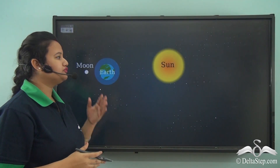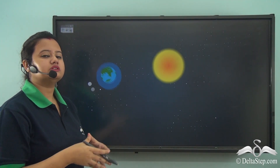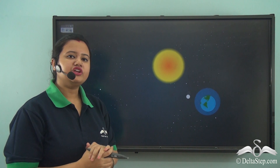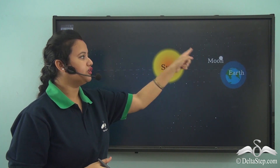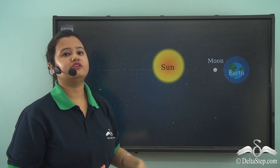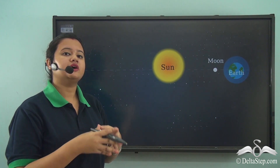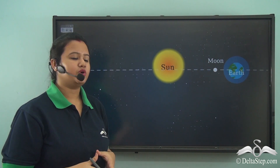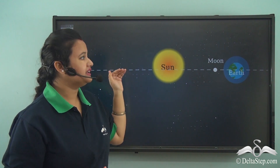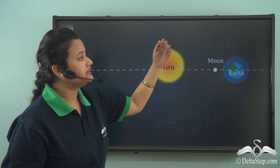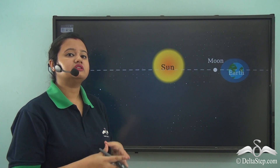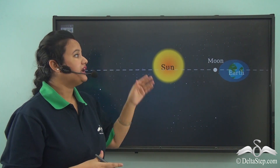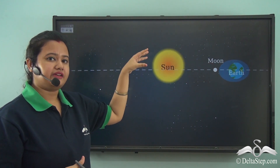Apart from the moon, the water bodies on the earth's surface also experience the gravitational pull of the sun. The earth revolves around the sun and the moon revolves around the earth simultaneously. Sometimes during this process, the celestial bodies — the sun, moon, and the earth — align in a straight line, causing the water bodies to be attracted by both the moon and the sun in the same direction.